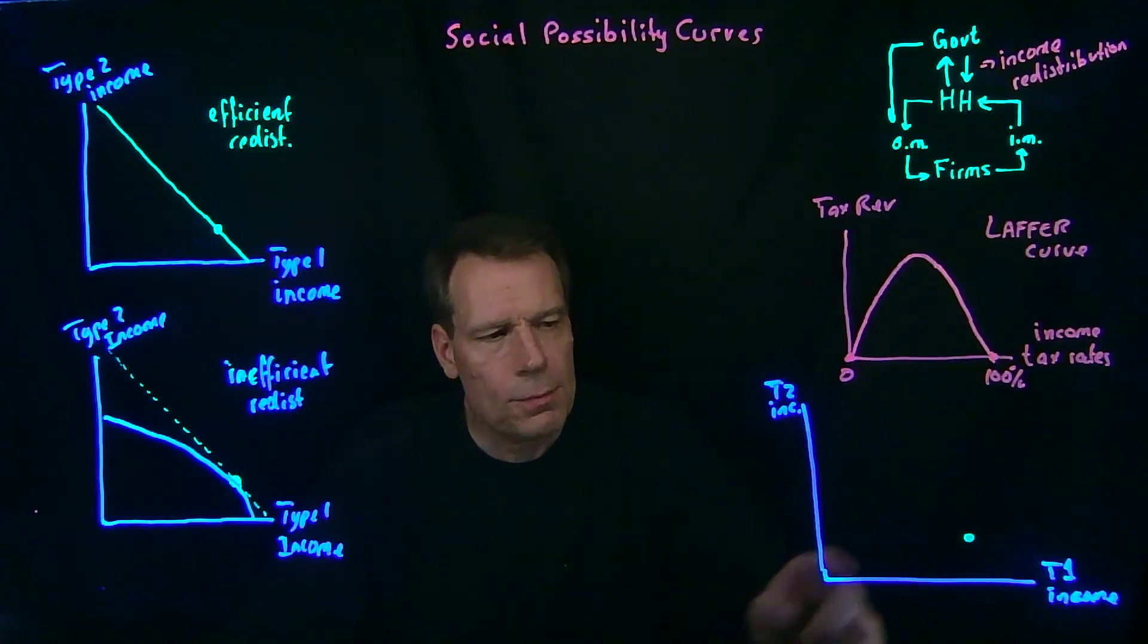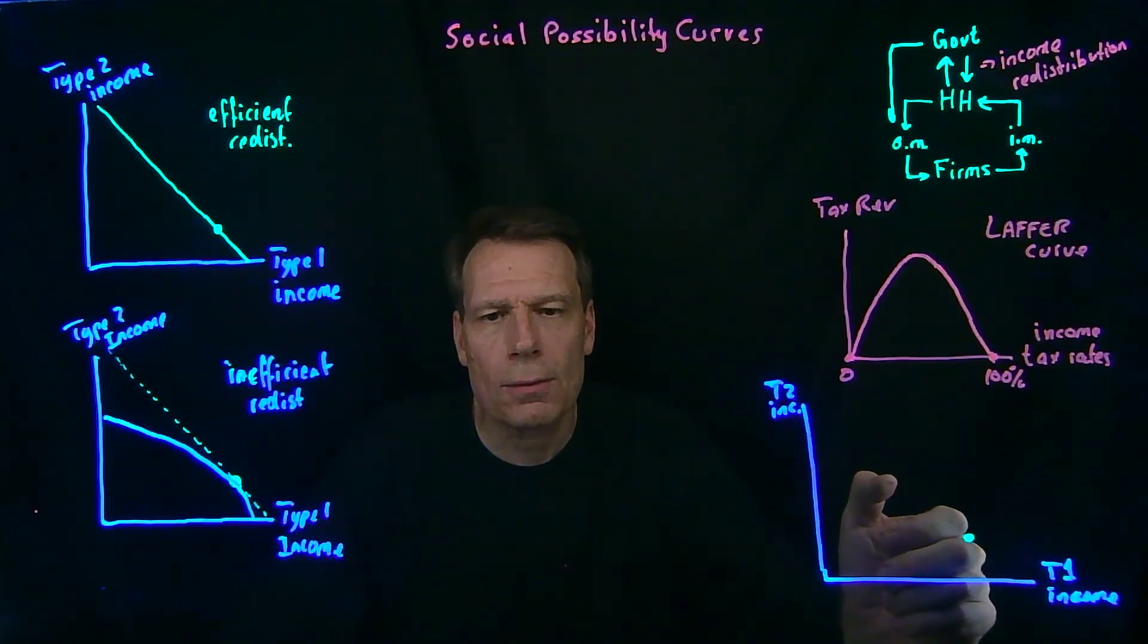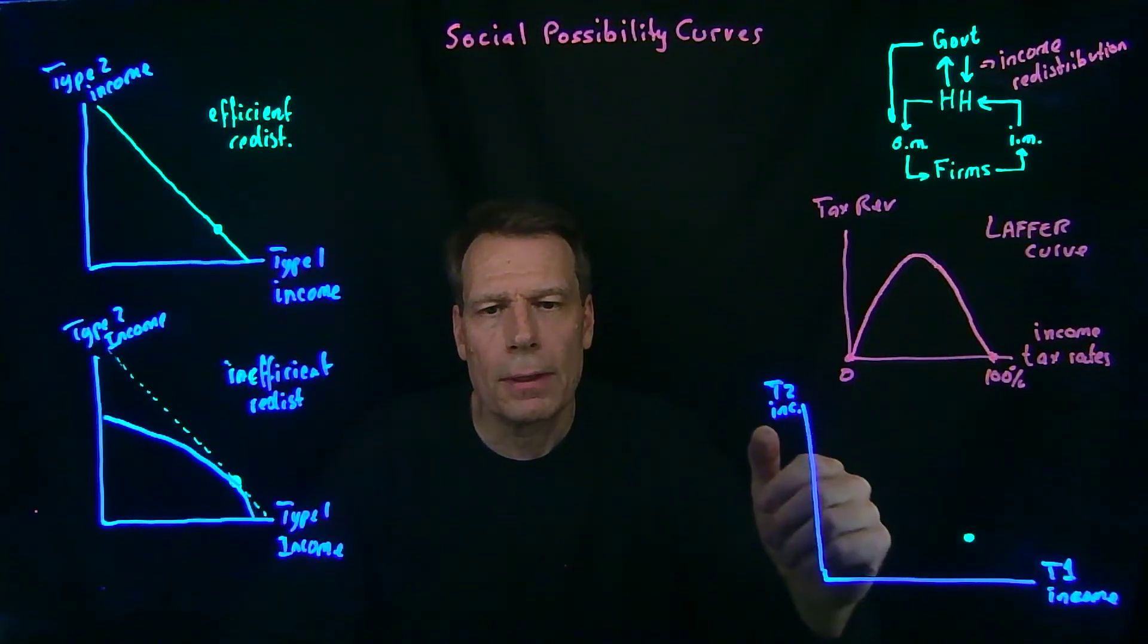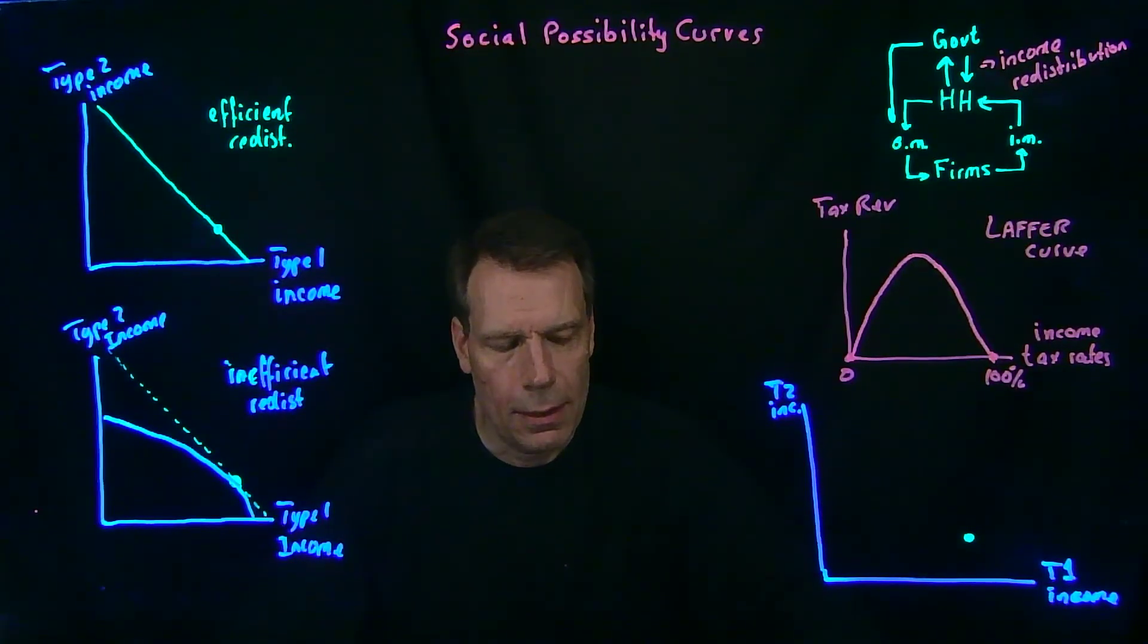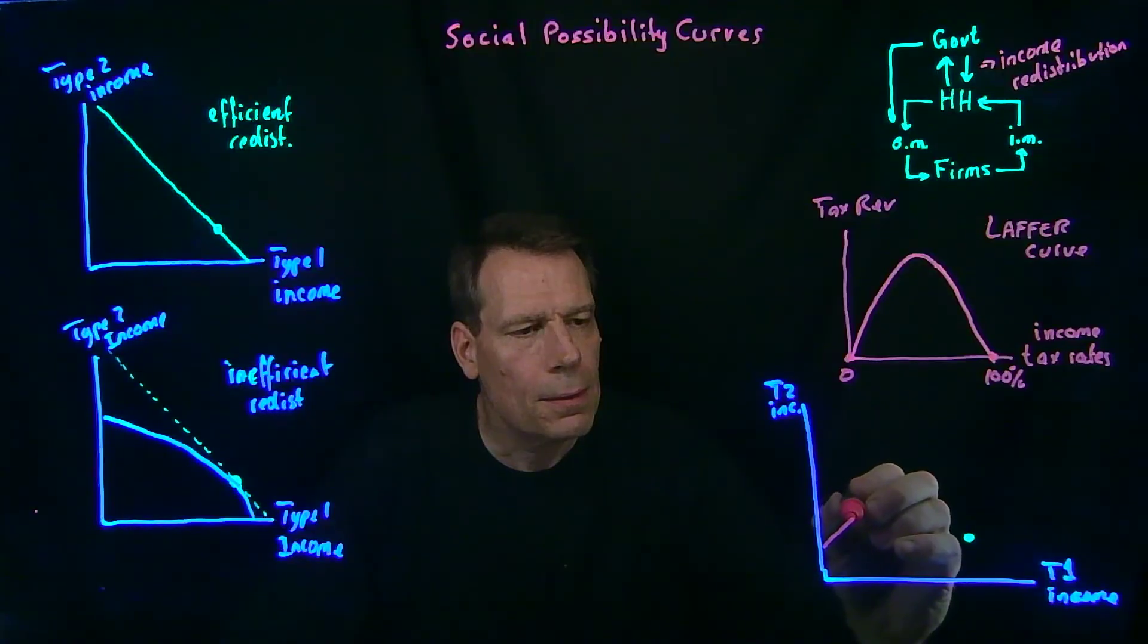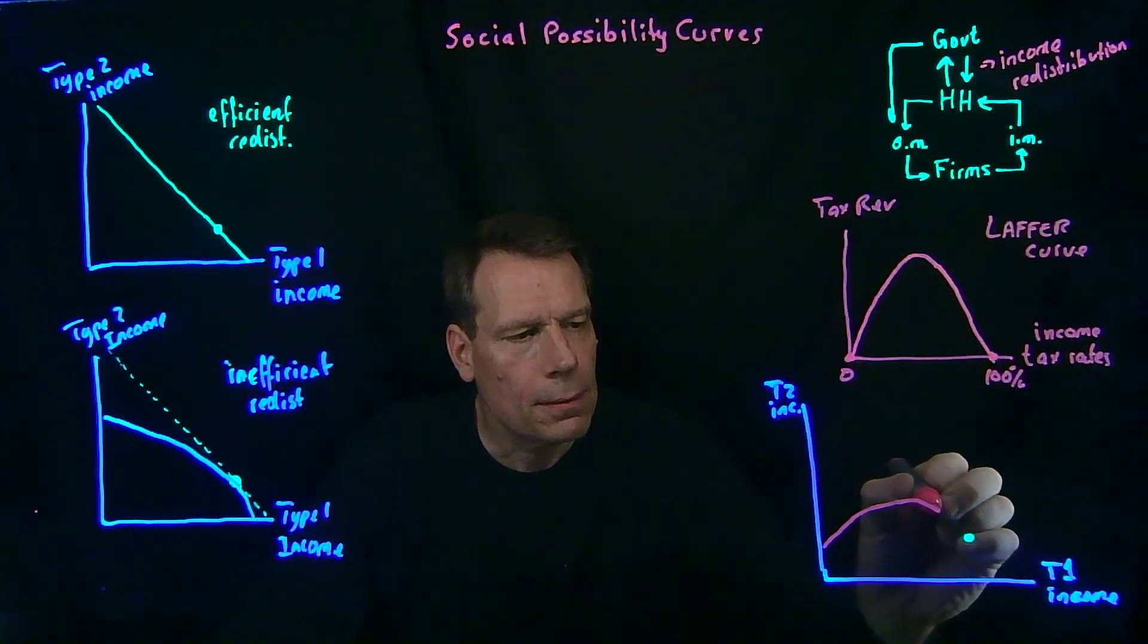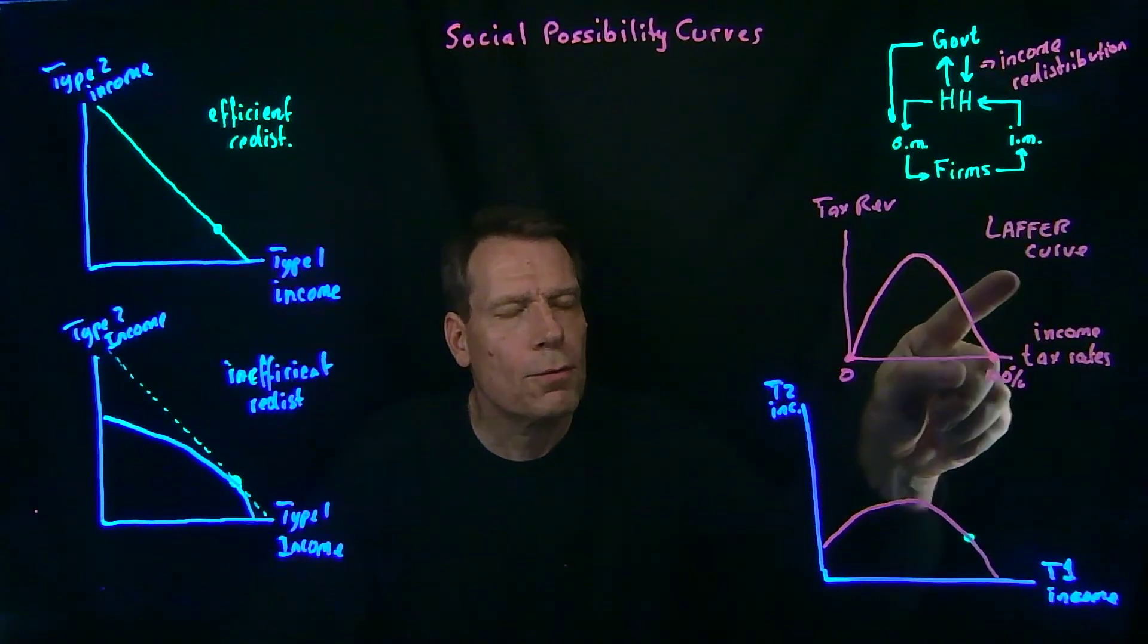But now, as we redistribute, we're going to incur those deadweight losses, but eventually we're going to actually collect less and less revenue for redistribution until we collect no revenue at all. And we're back to type 2 people having what they started with. So we're going to get a curve that looks more like this, if we incorporate insights from the Laffer curve.